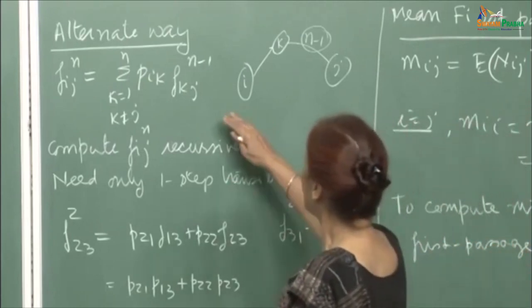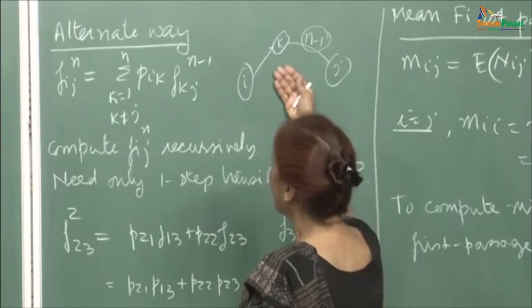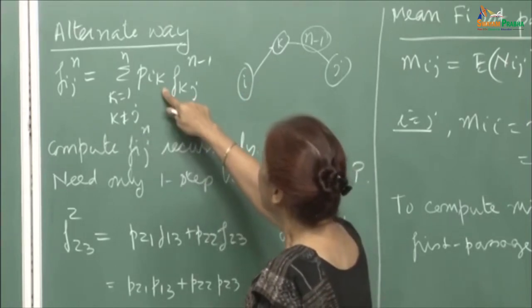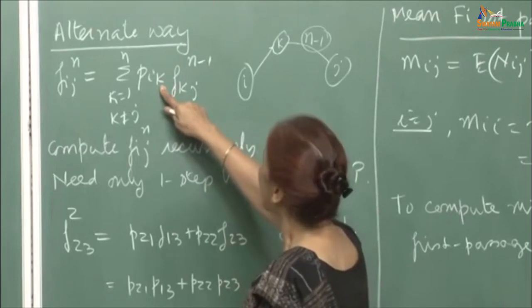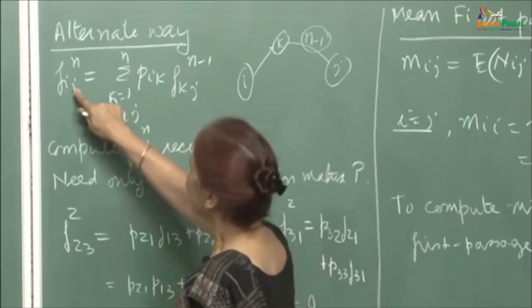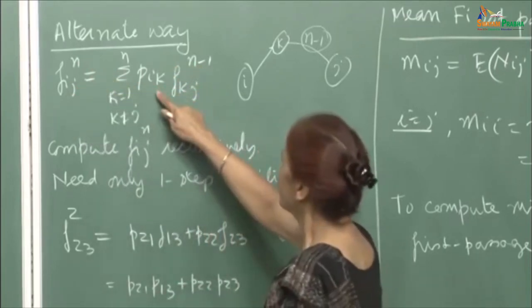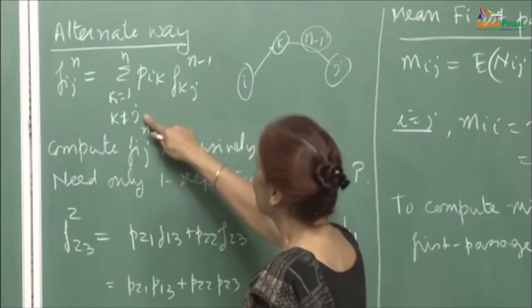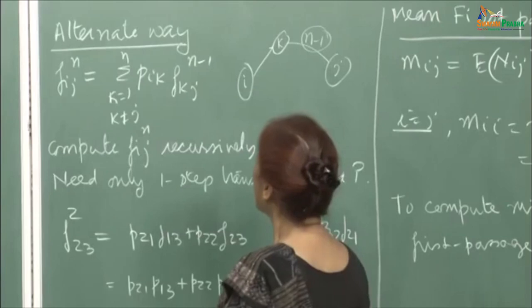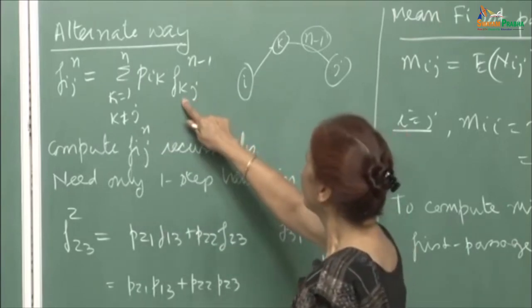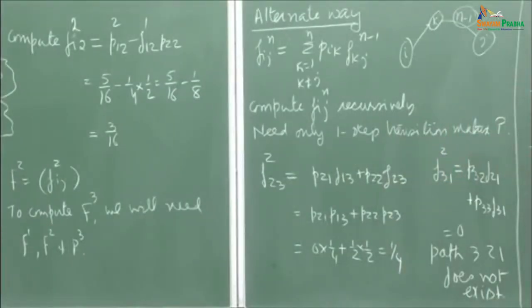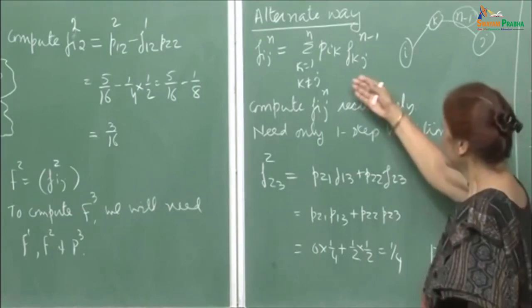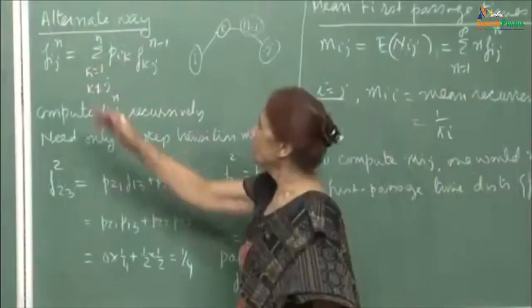The argument is: since k should not be j — because you must visit j for the first time — you will definitely visit some other state k from i in one step. Since you want to visit j from i in n steps, in the first step you go somewhere different from j, and then you need f_kj(n minus 1): from k to j for the first time in n minus 1 steps. This is a neater way of computing first passage probabilities, and we just need the one-step transition matrix P.